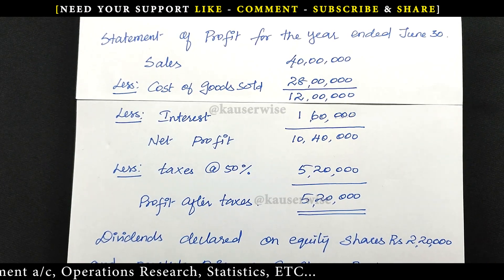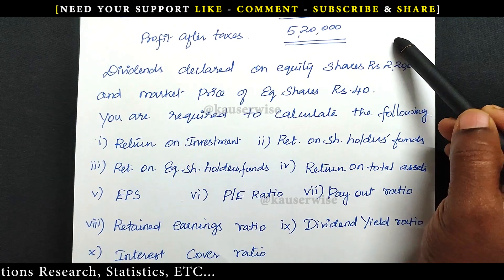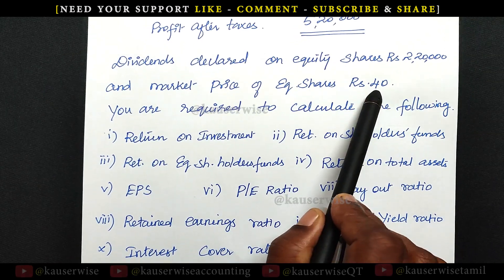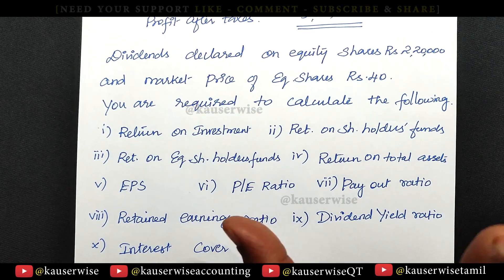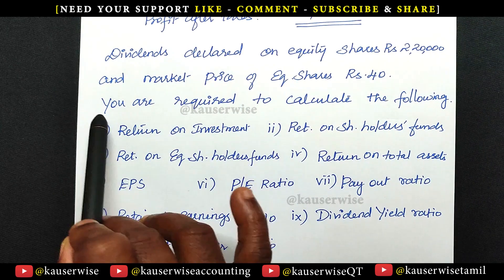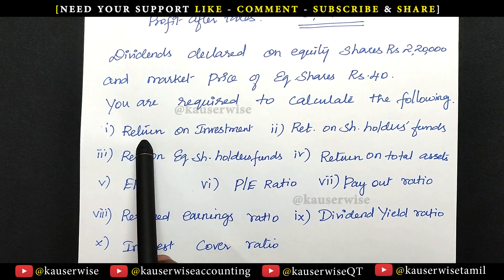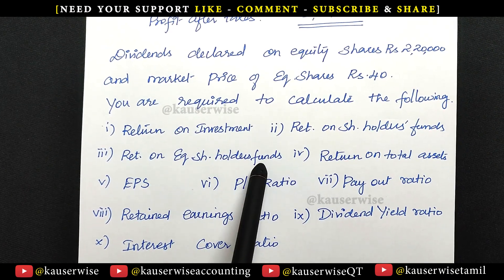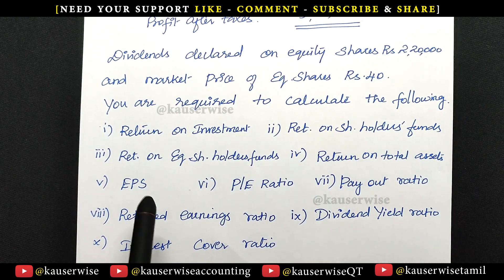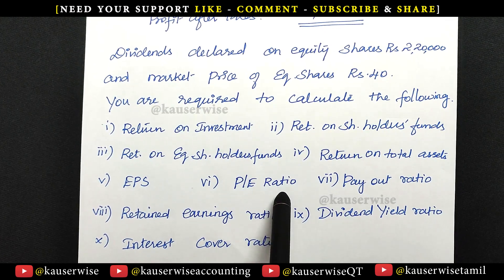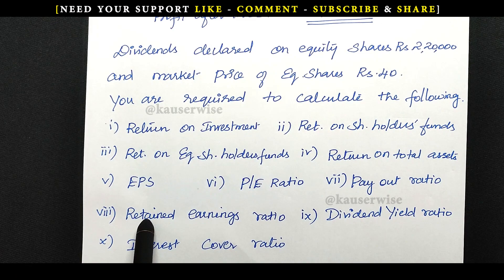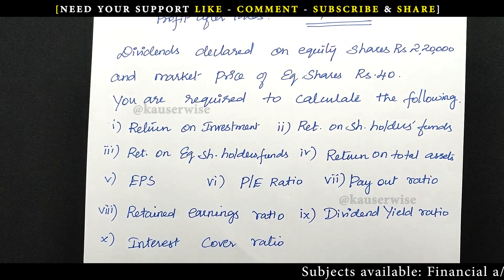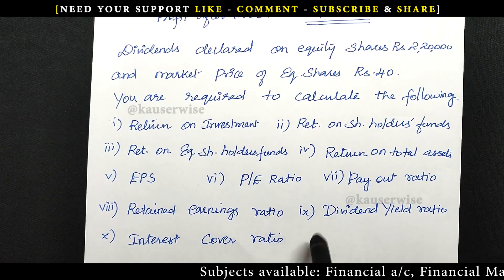They have given information from the balance sheet as well as the income statement. The adjustments include: dividend declared on equity shares rupees 2,20,000 and market price of equity shares rupees 40. You are required to calculate: (1) return on investment, (2) return on shareholders funds, (3) return on equity shareholders funds, (4) return on total assets, (5) earnings per share, (6) price-earnings ratio, (7) payout ratio, (8) retained earnings ratio, (9) dividend yield ratio, and (10) interest cover ratios.